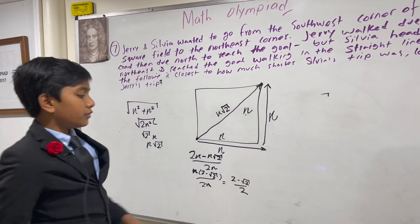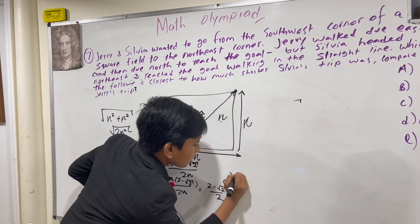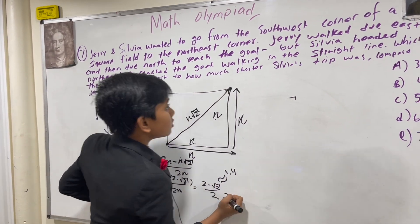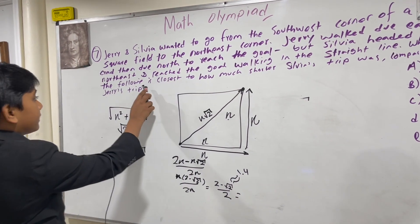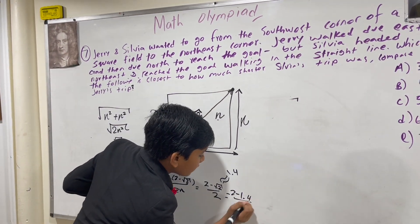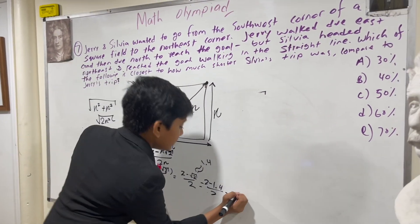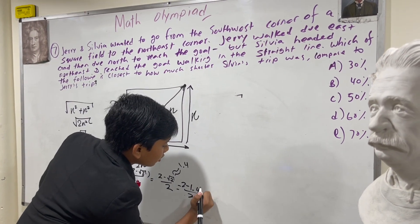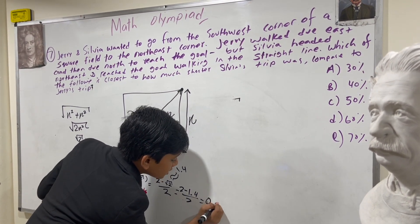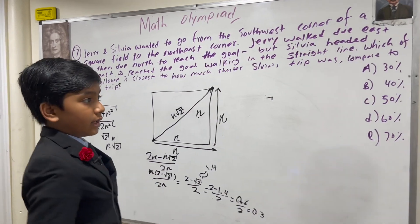The square root of 2 is about 1.4, so because it says which of the following is closest, 2 minus 1.4 over 2 is equivalent to 0.6 over 2, or 0.3, which is 30%.